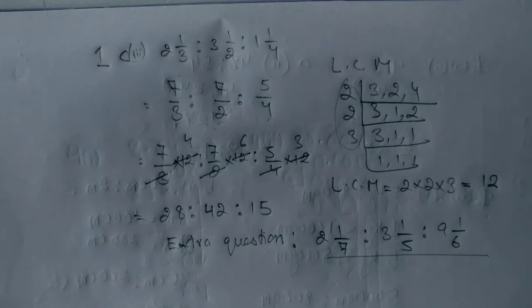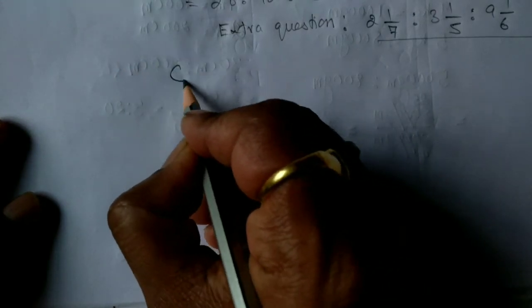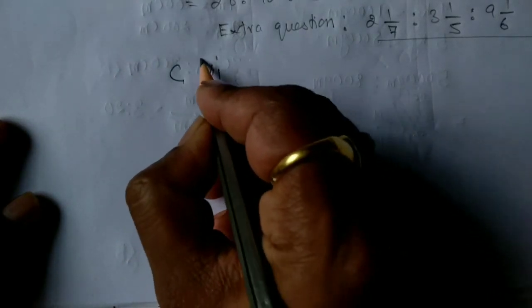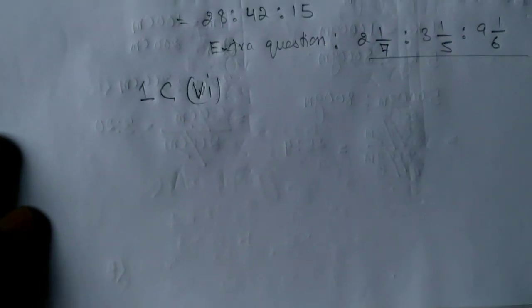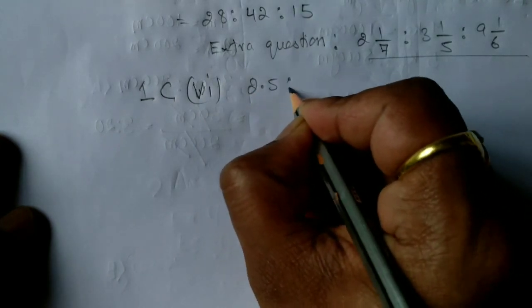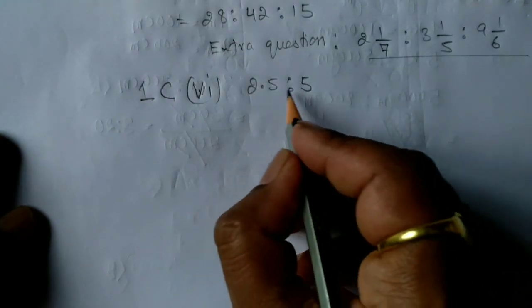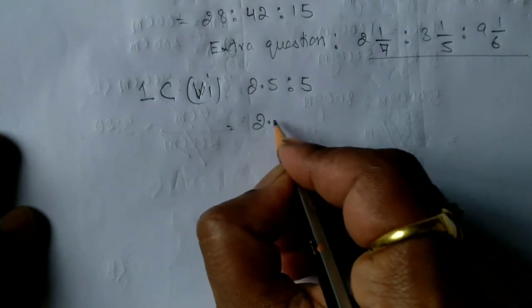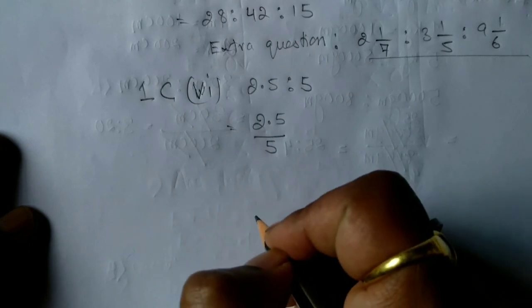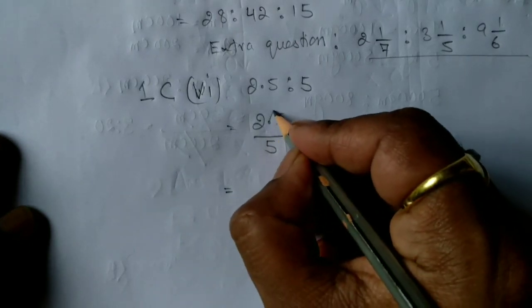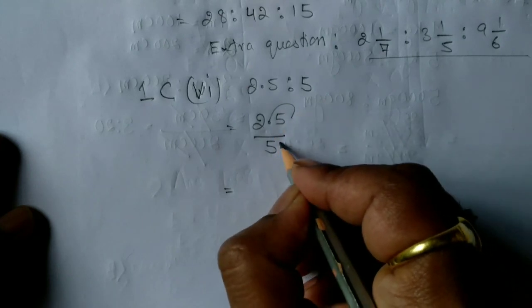Now we can go to the next question, which is number c6. If you go to number c6 and read it out from your book, it is 2.5 is to 5. So this is a decimal number here, so I can write this as 2.5 upon 5.